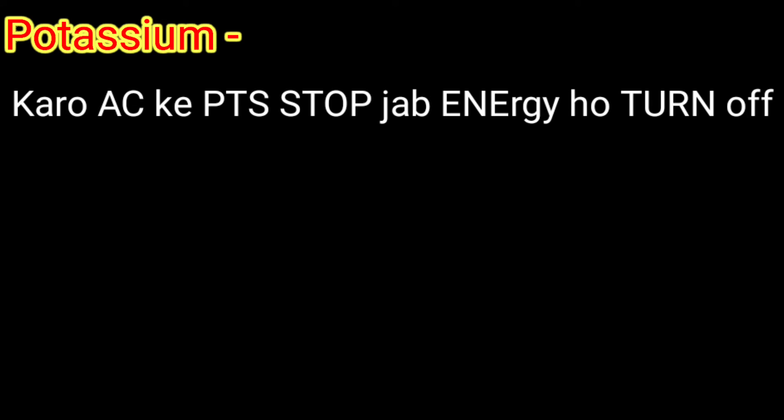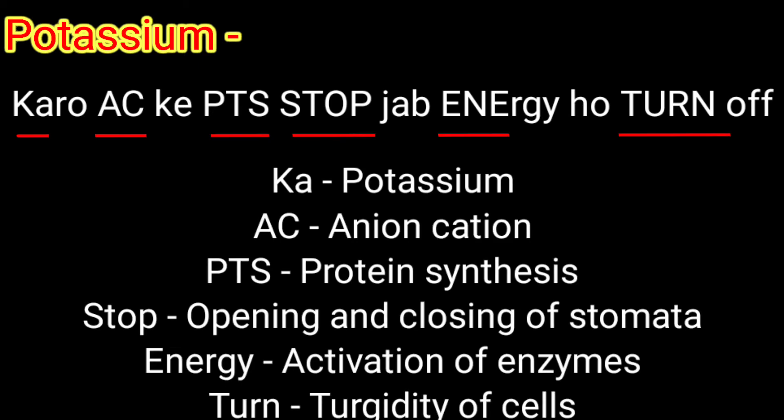Third, potassium. Potassium helps to maintain anion-cation balance in the cell and is involved in protein synthesis, opening and closing of stomata, activation of enzymes, and maintenance of turgidity of cells. The trick is: 'Karo AC k point stop. Jab energy ho, turn off.' KA denotes potassium, AC denotes anion-cation balance, PTS denotes protein synthesis, Stops denotes opening and closing of stomata, E and E denote activation of enzyme, and Turner denotes turgidity of cells.